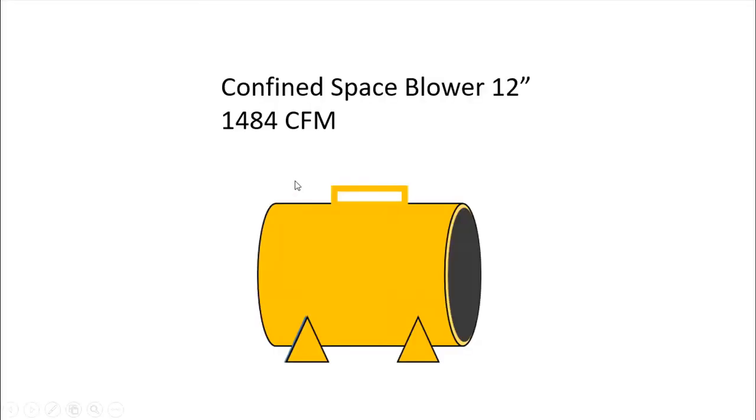This is the blower I'm talking about: confined space blower 12 inches and 1484 cubic feet per minute. This is only one example; you can use either 3, 2, or 8 depending upon your requirements, but in this tutorial I will show an example of how to compute using this blower.